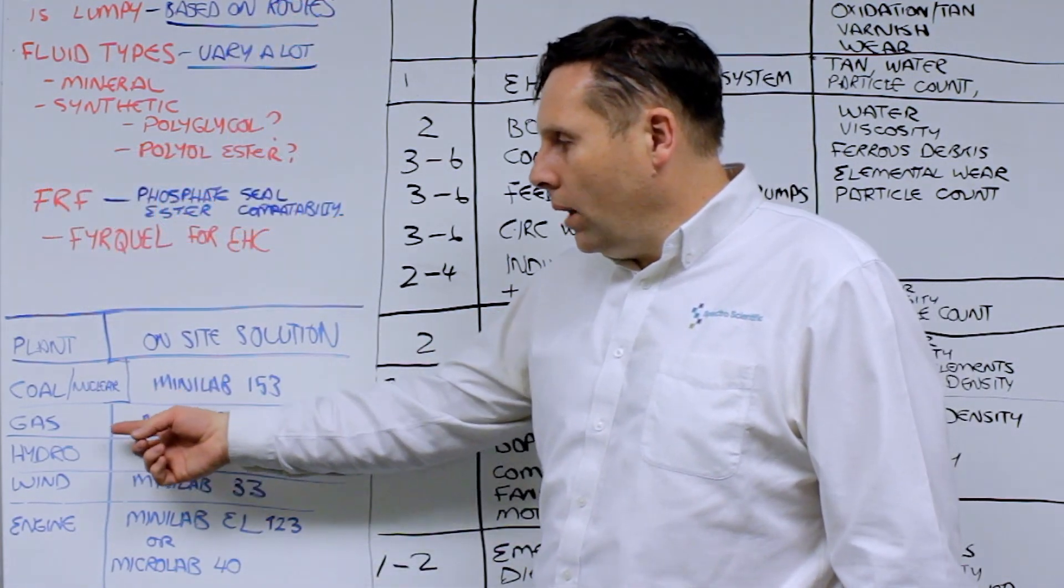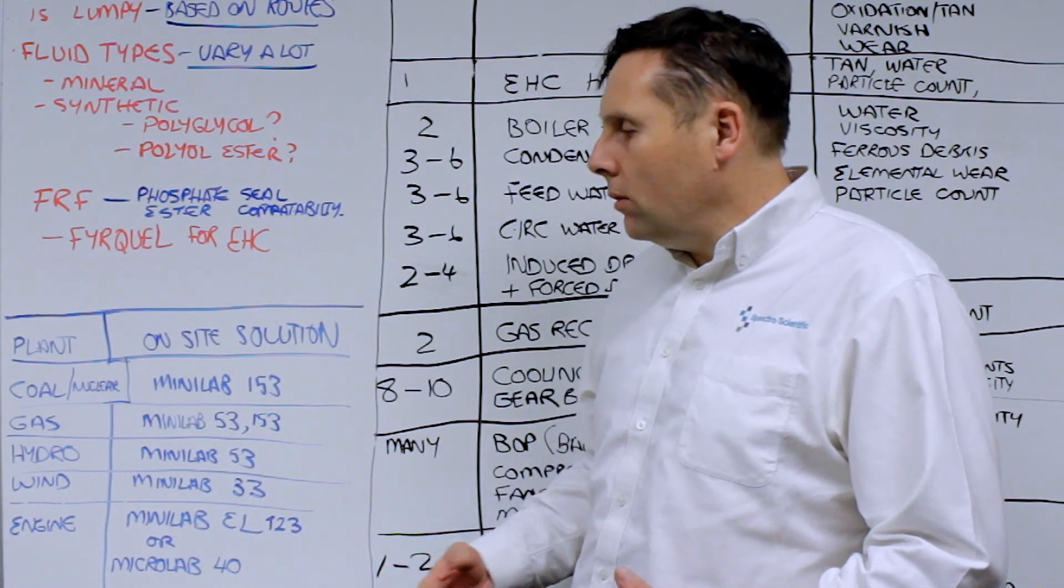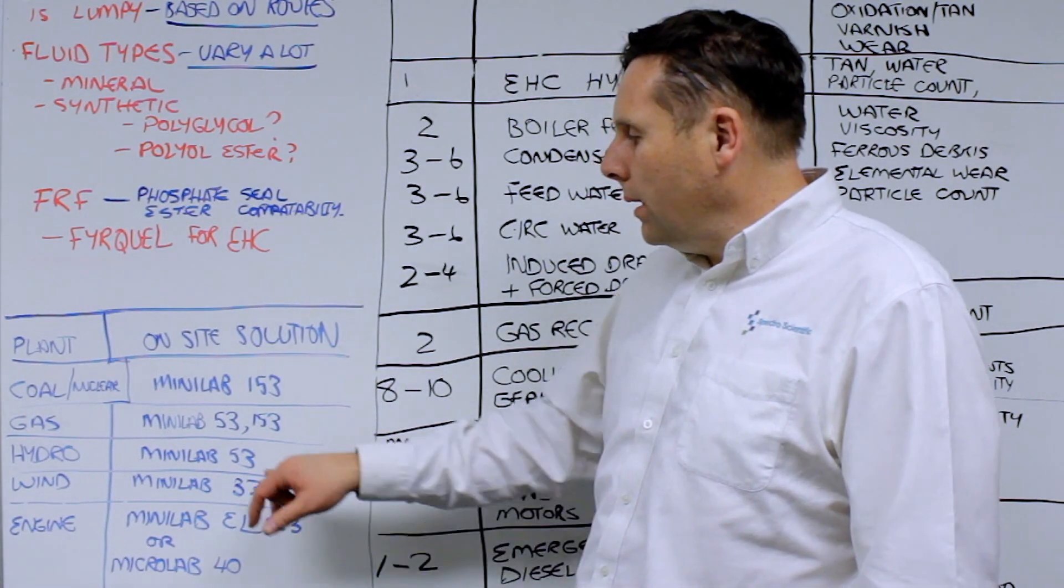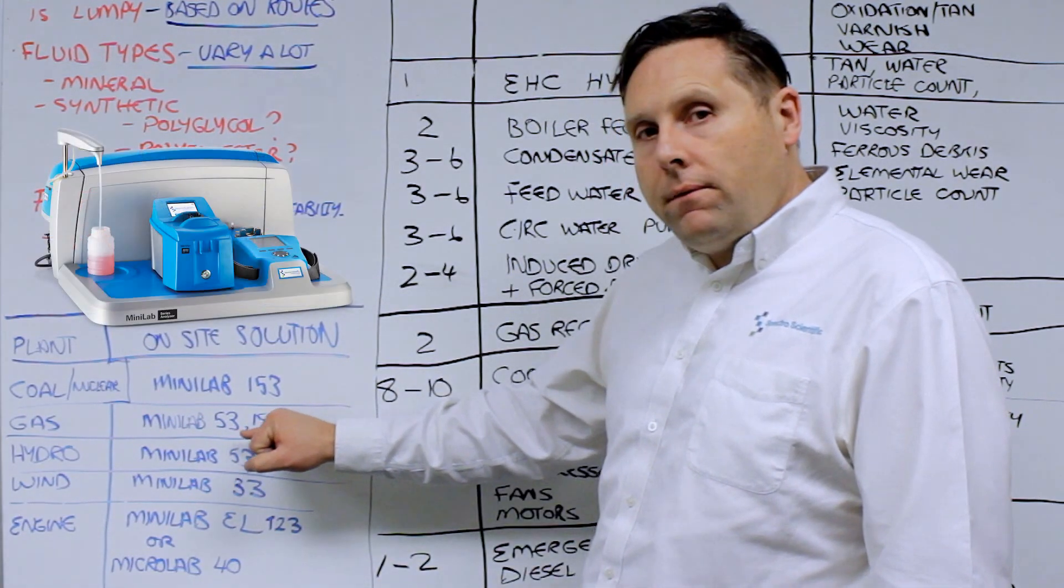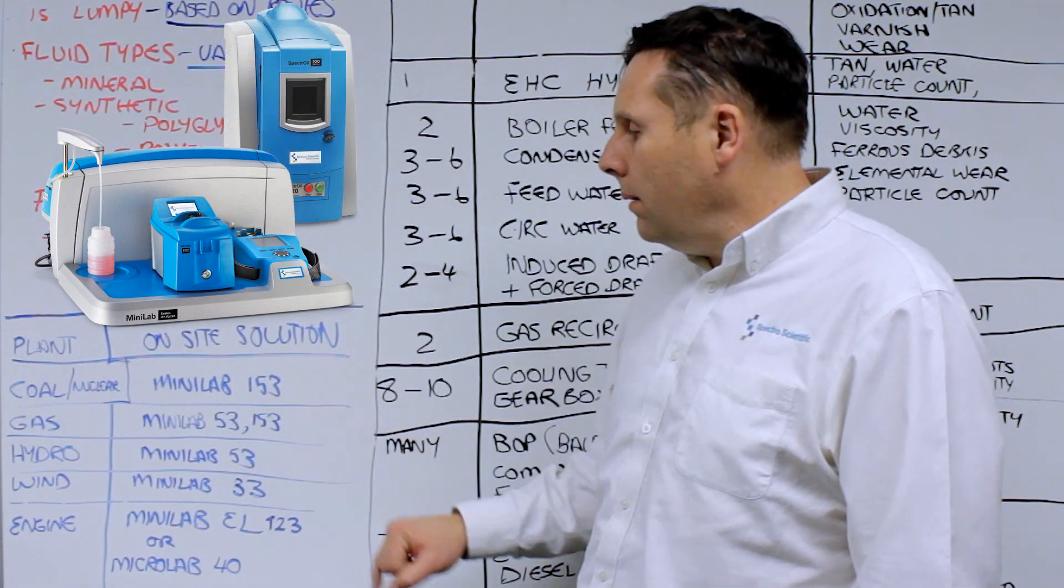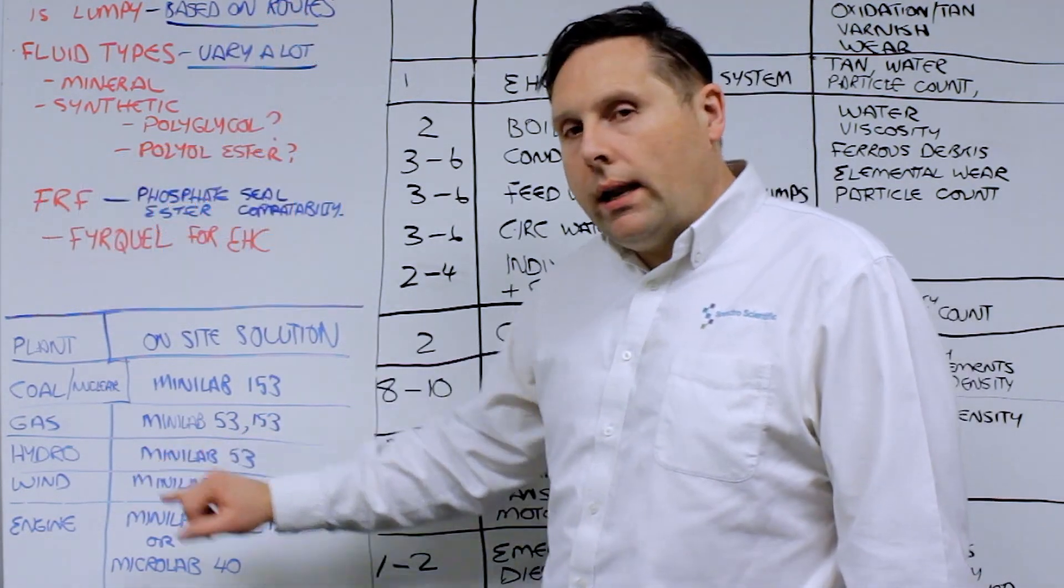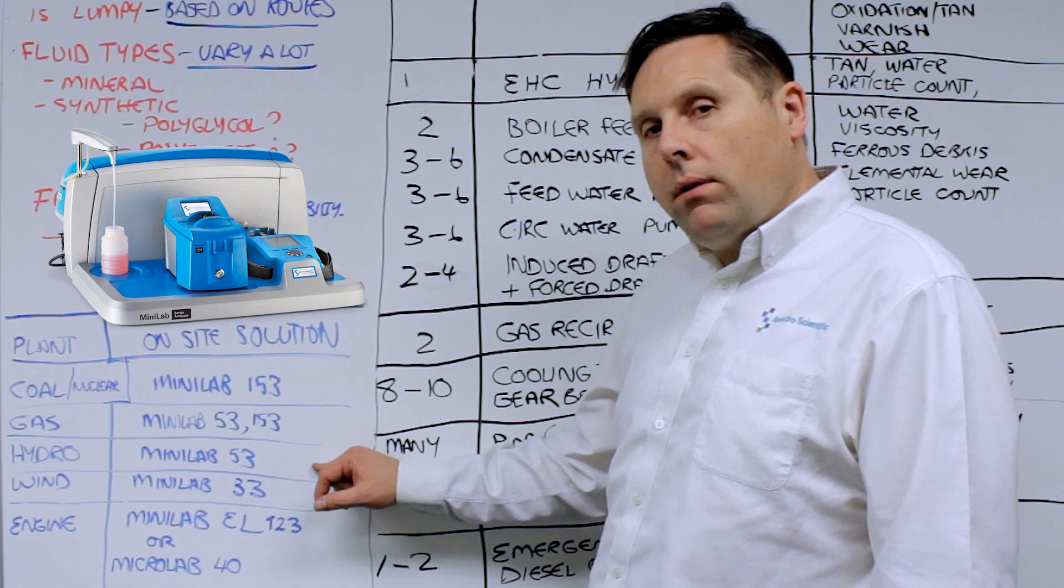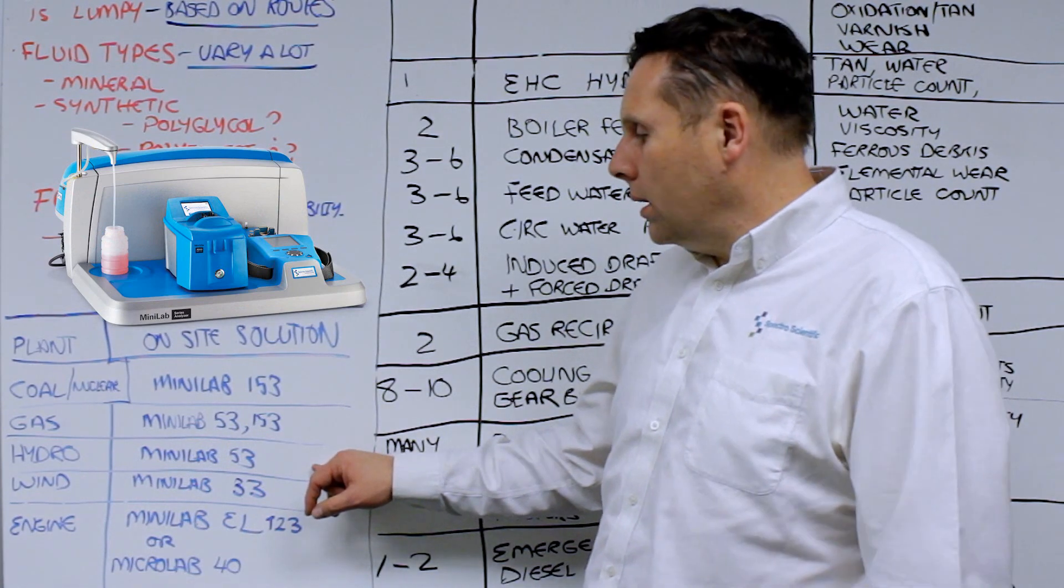Same thing goes with if you have a gas turbine plant or a combined cycle gas turbine plant, consider a Minilab 53 or a 153. If you have a hydroelectric facility, a Minilab 53 is a great adequate tool for on-site there.